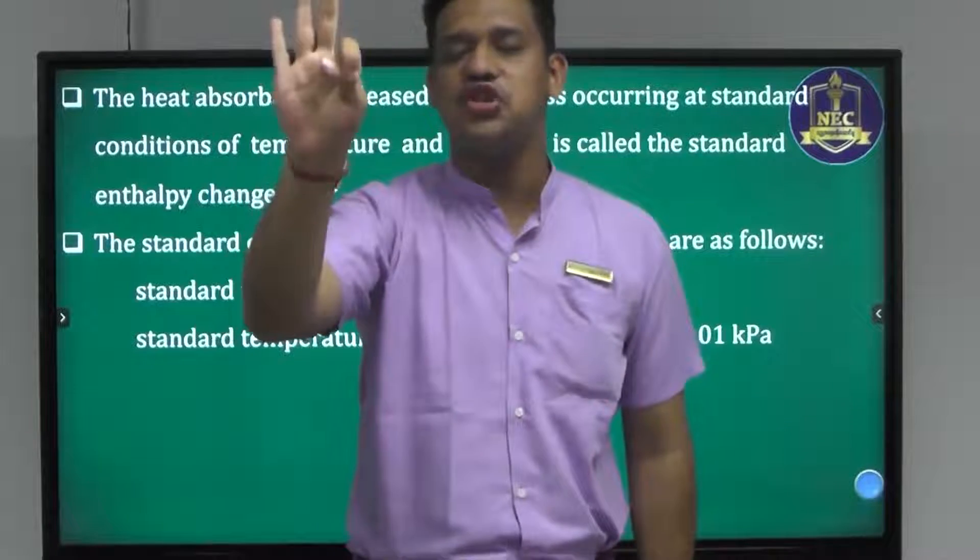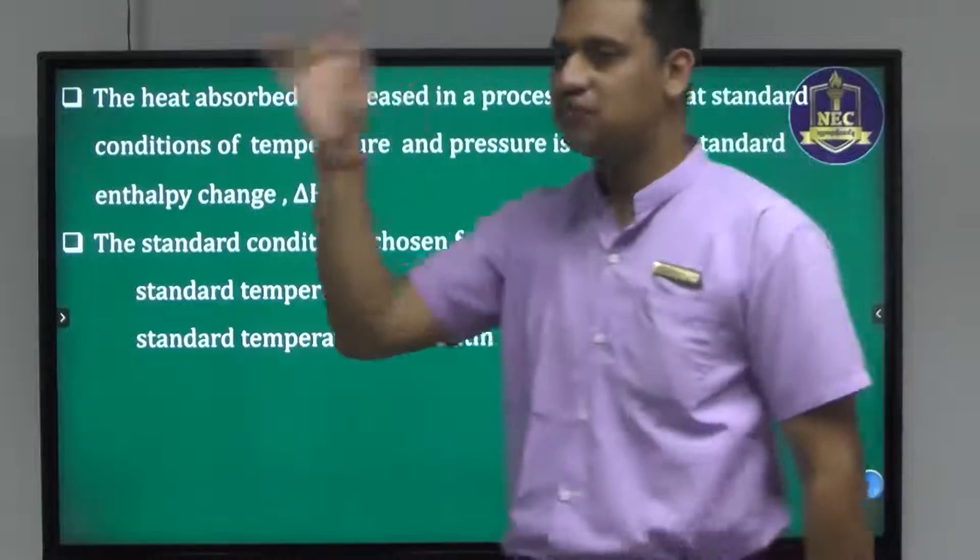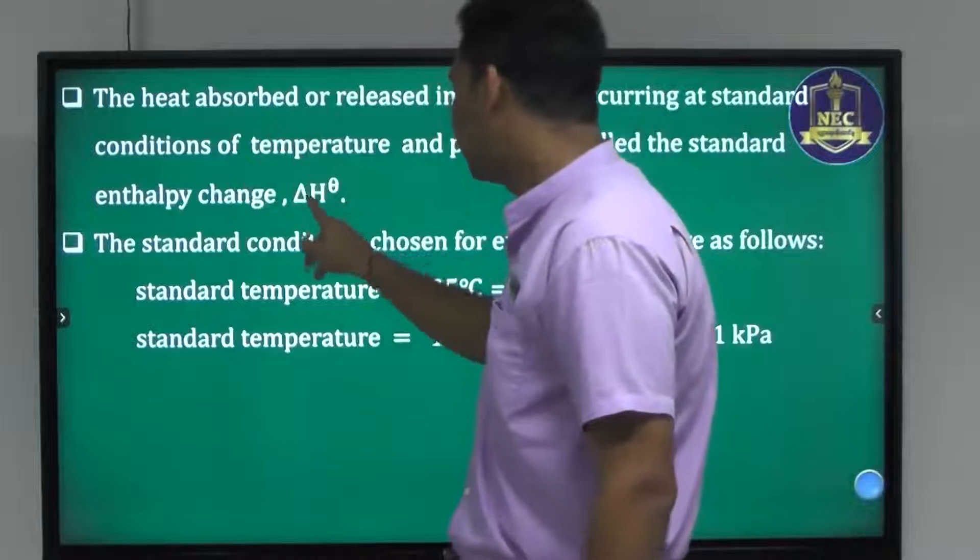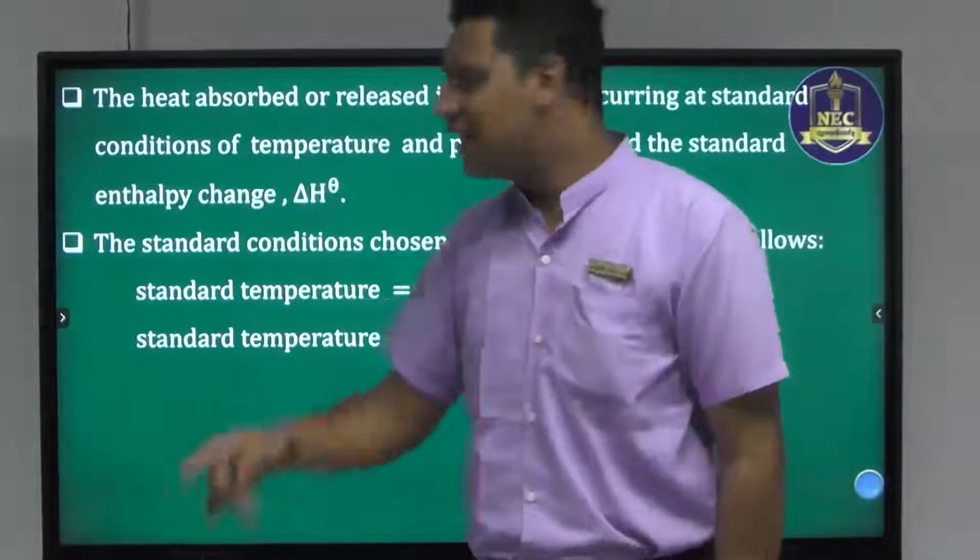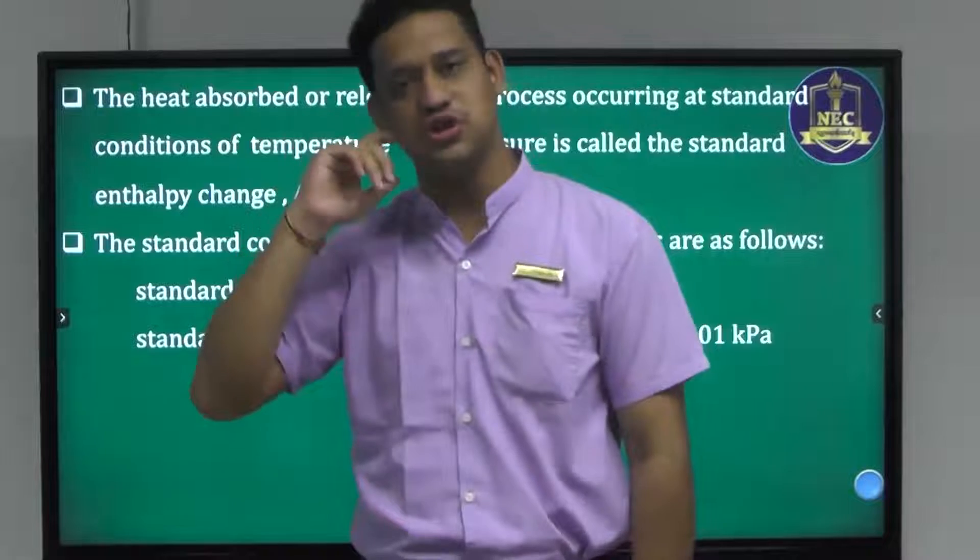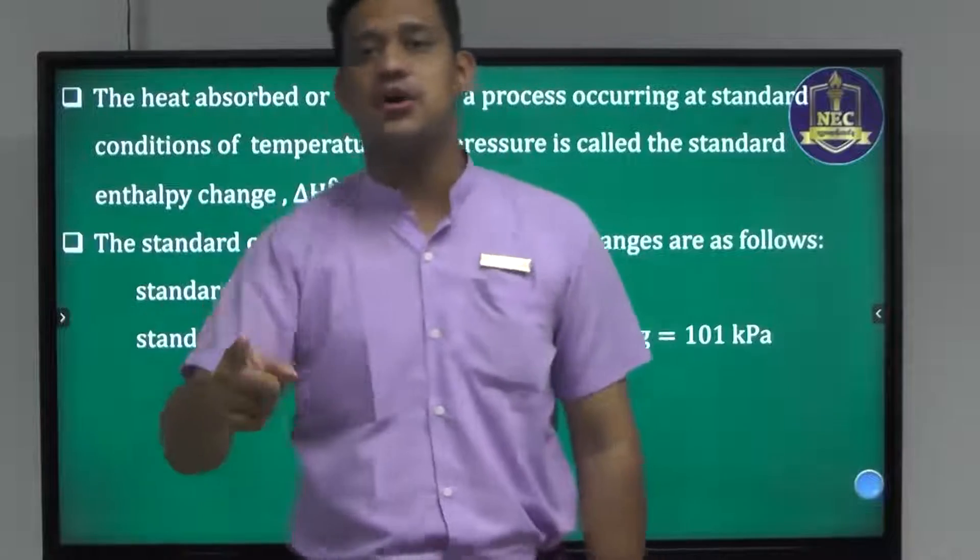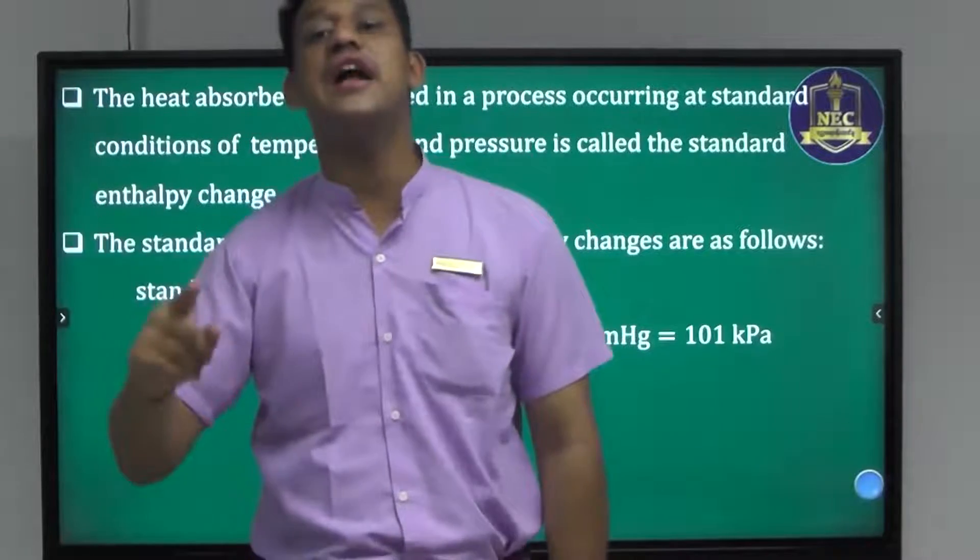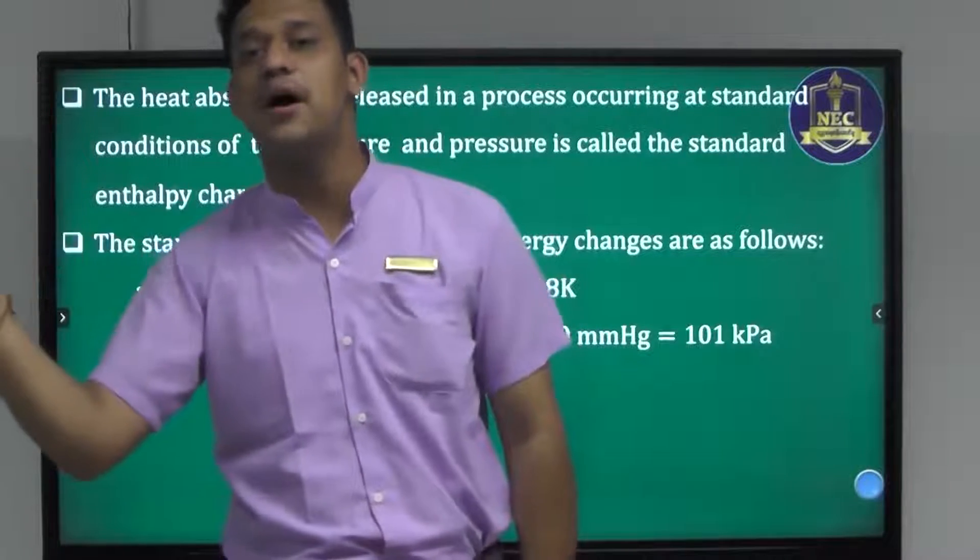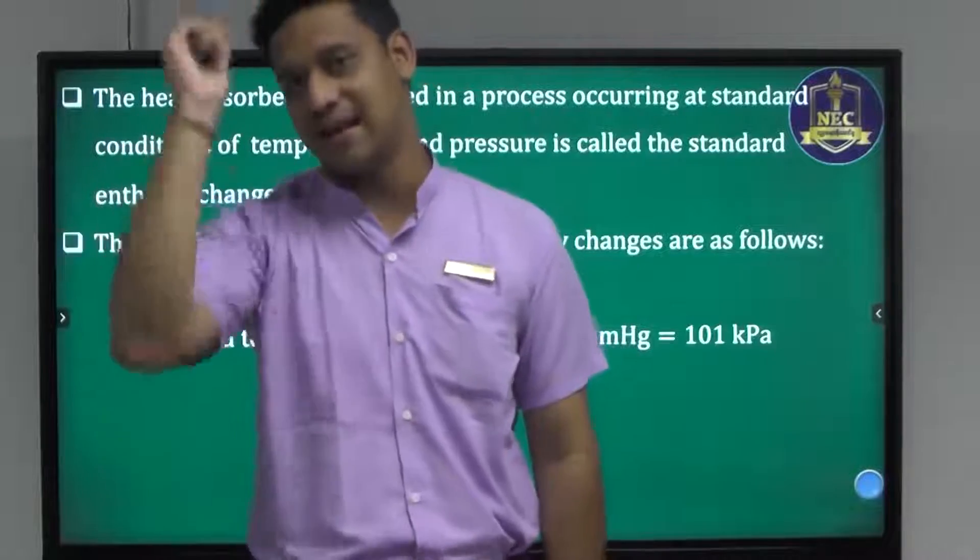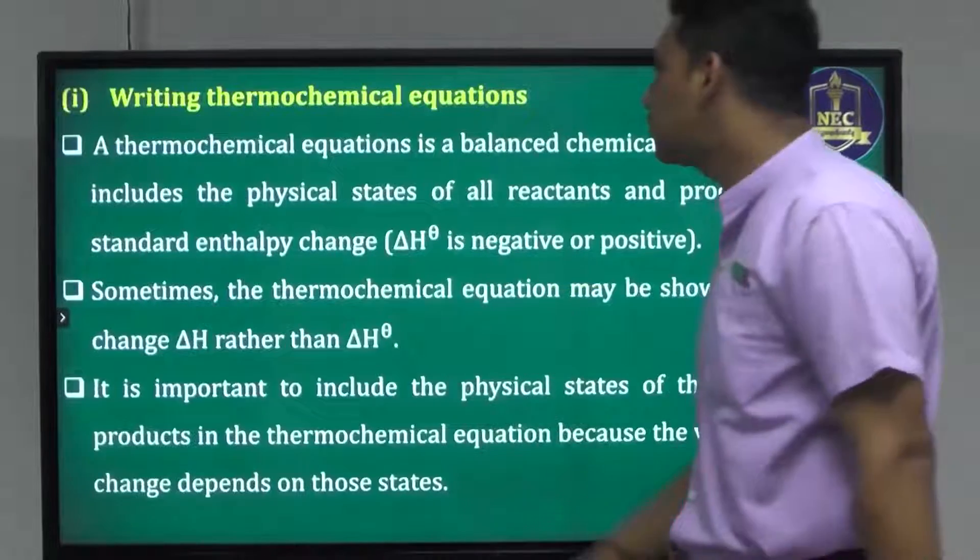Standard enthalpy change is denoted by delta H standard. The standard conditions are: standard temperature is 298 Kelvin, standard pressure is 1 atmosphere, 760 millimeters of mercury, or 101 kilopascals. These are the standard conditions we need to specify.